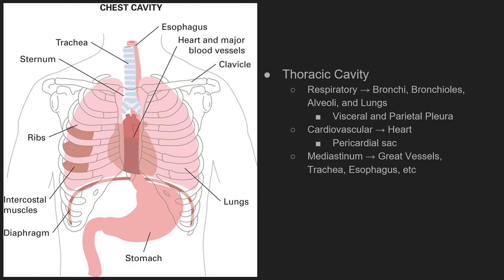Surrounding each lung is a covering known as a pleura — we have both the visceral and the parietal pleura. You also have the cardiovascular system: the heart, the great vessels, and a pericardial sac — similar to the pleura — which is a membrane covering the exterior of the heart. The mediastinum is essentially the center directly beneath the sternal plate, consisting of the great vessels: the aorta, the vena cava, the esophagus, the trachea, and the heart itself.